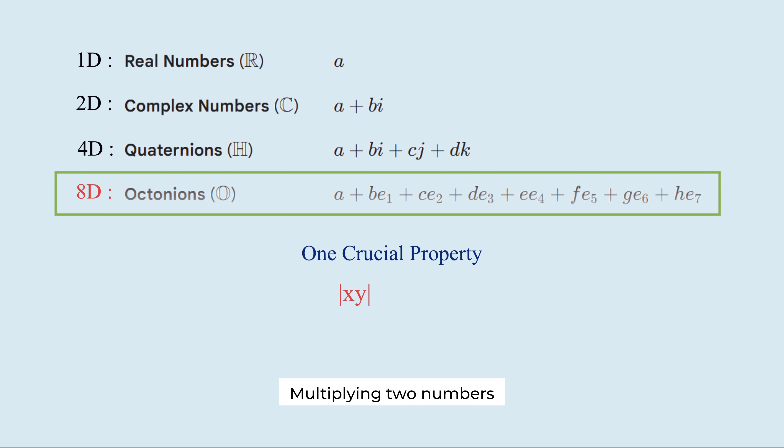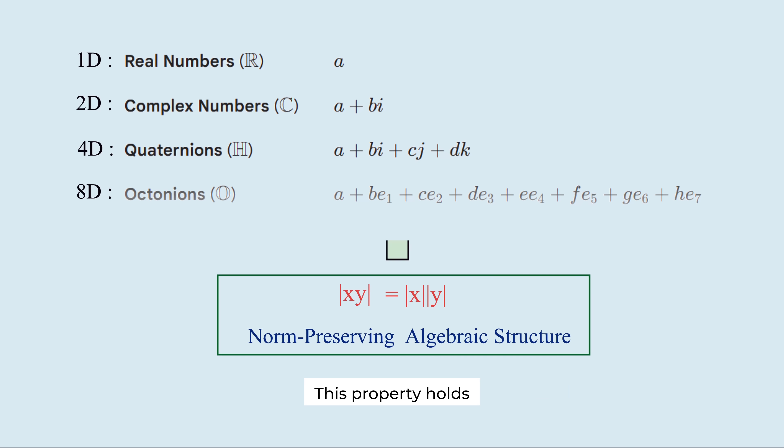Multiplying two numbers never changes their length. This is a special stability of the multiplication operation, often described as a norm-preserving algebraic structure. This property holds only in dimensions 1, 2, 4, and 8. In other dimensions, even this stability breaks down. This is called Hurwitz's theorem.